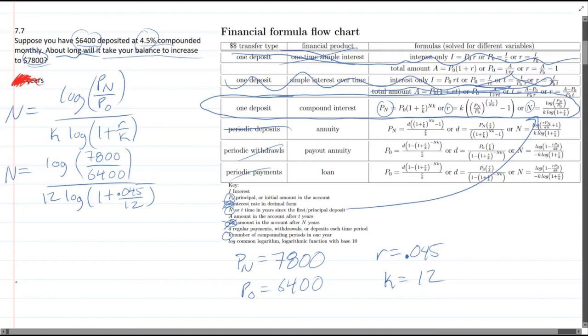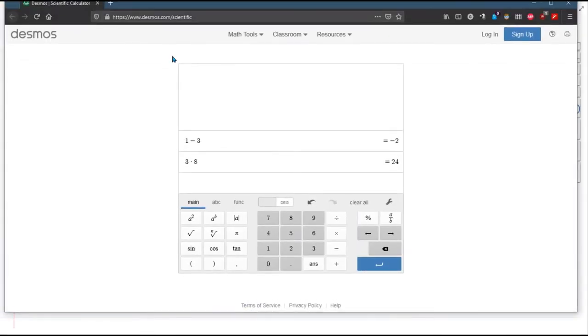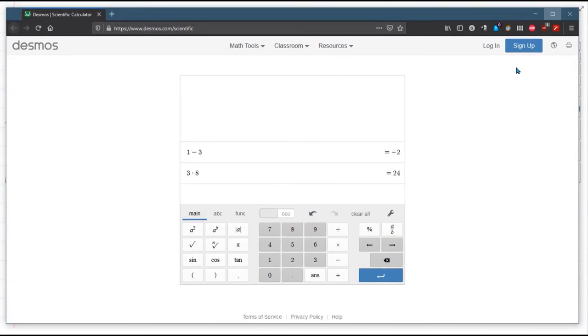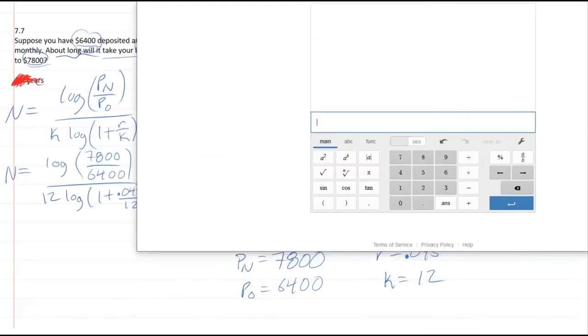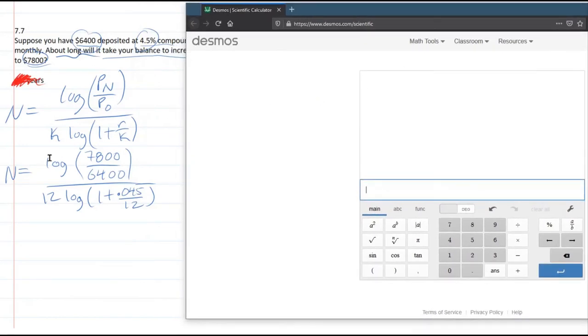So we have everything written out. Now we have to type it in. And what I'm going to use is the Desmos calculator. It's available online, desmos.com. This is the scientific calculator. You can see the address right there, desmos.com. This is the scientific calculator. So I'm going to need to see both the calculator and my work.